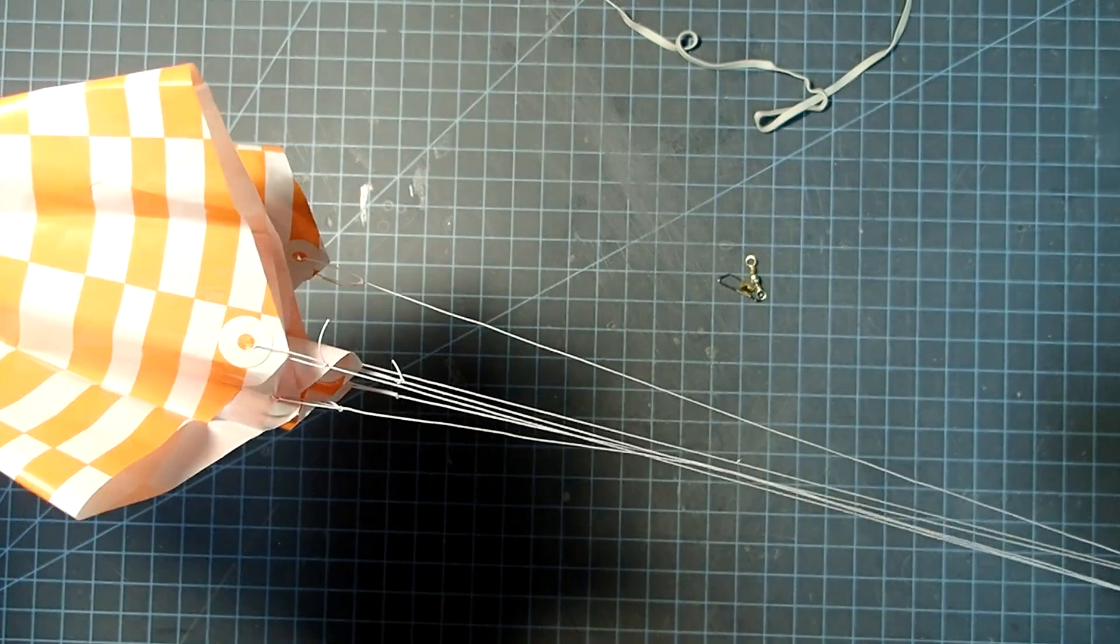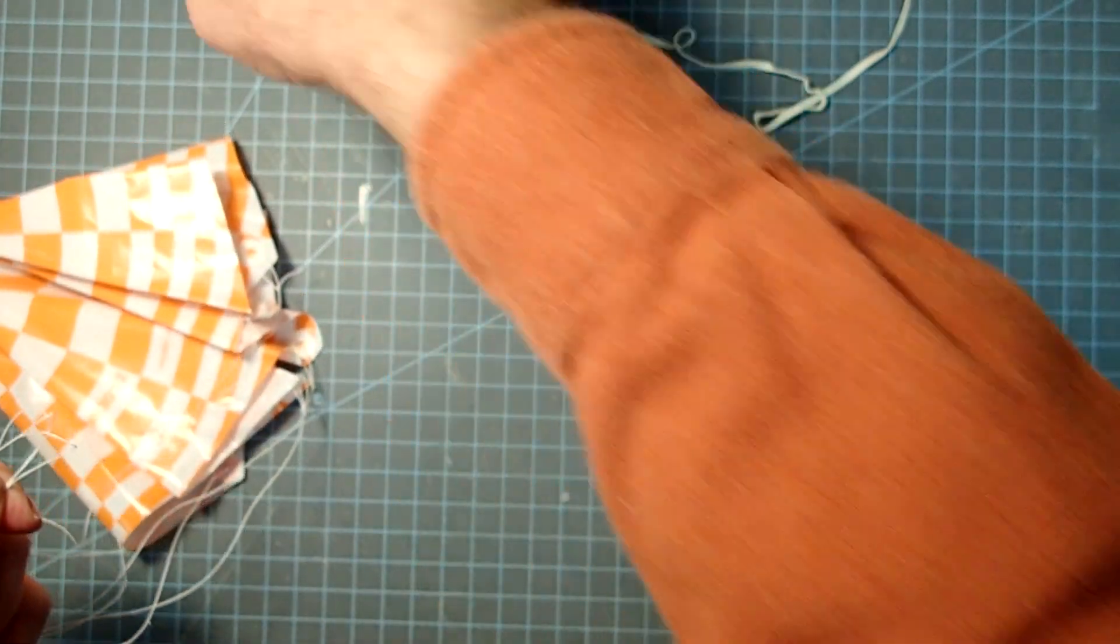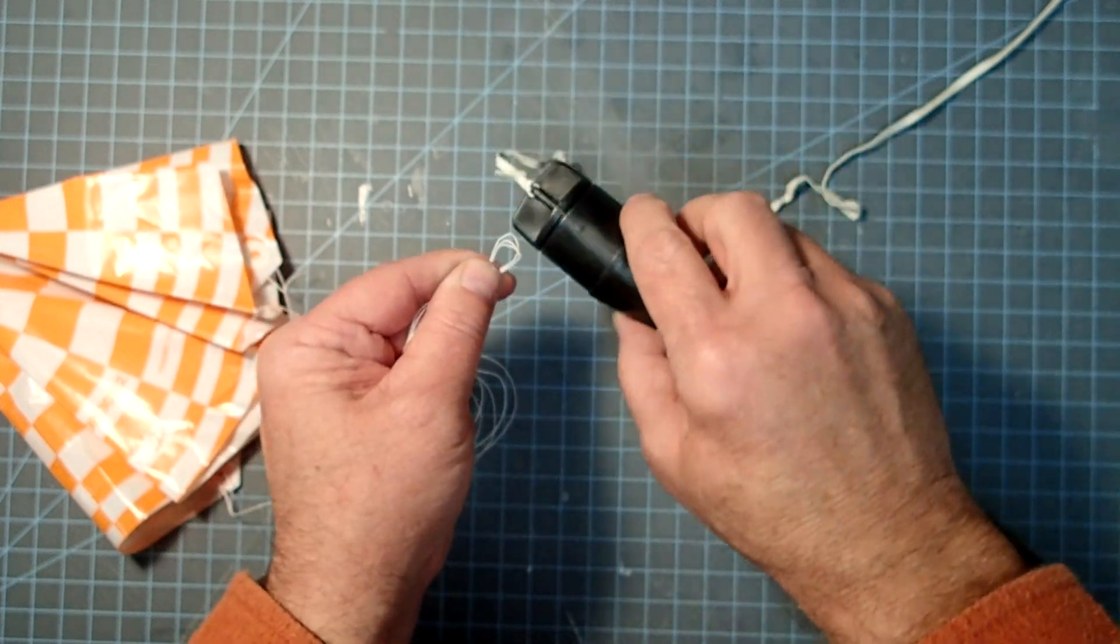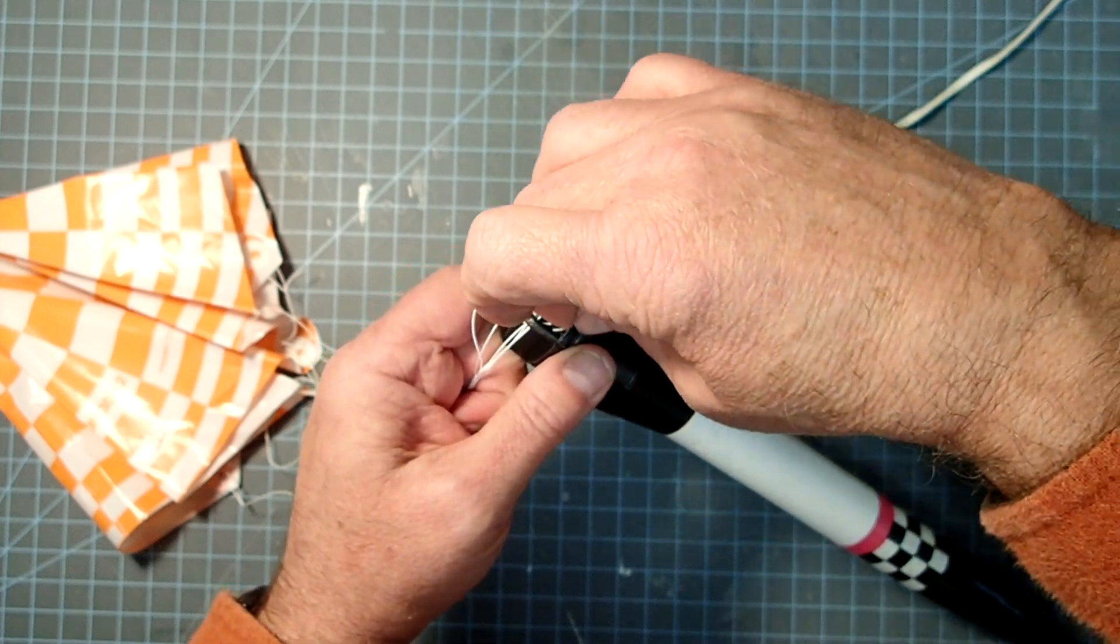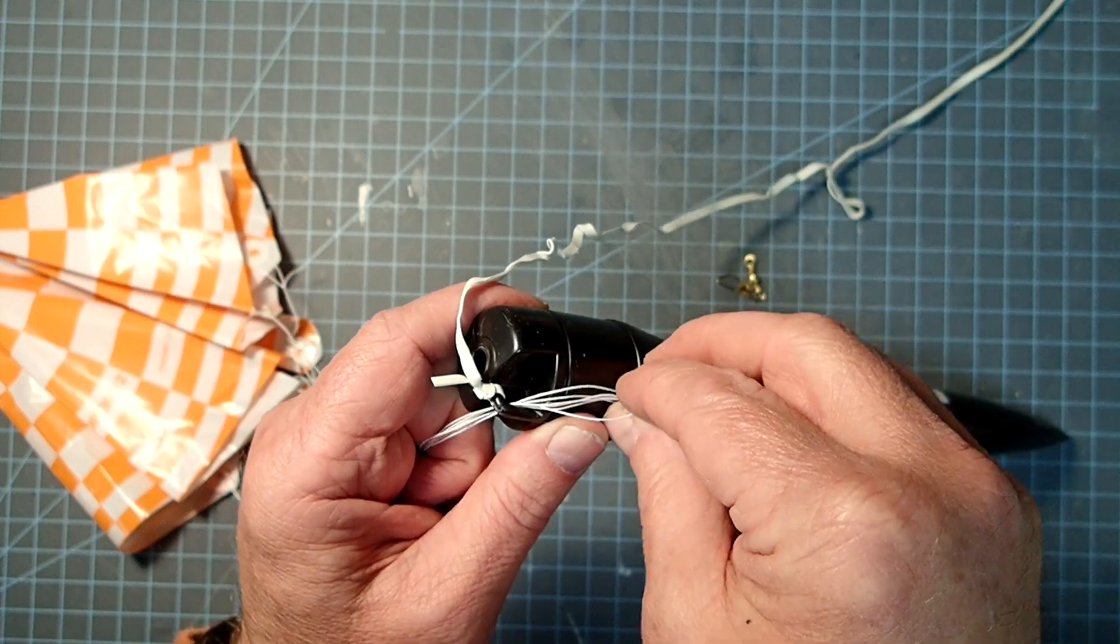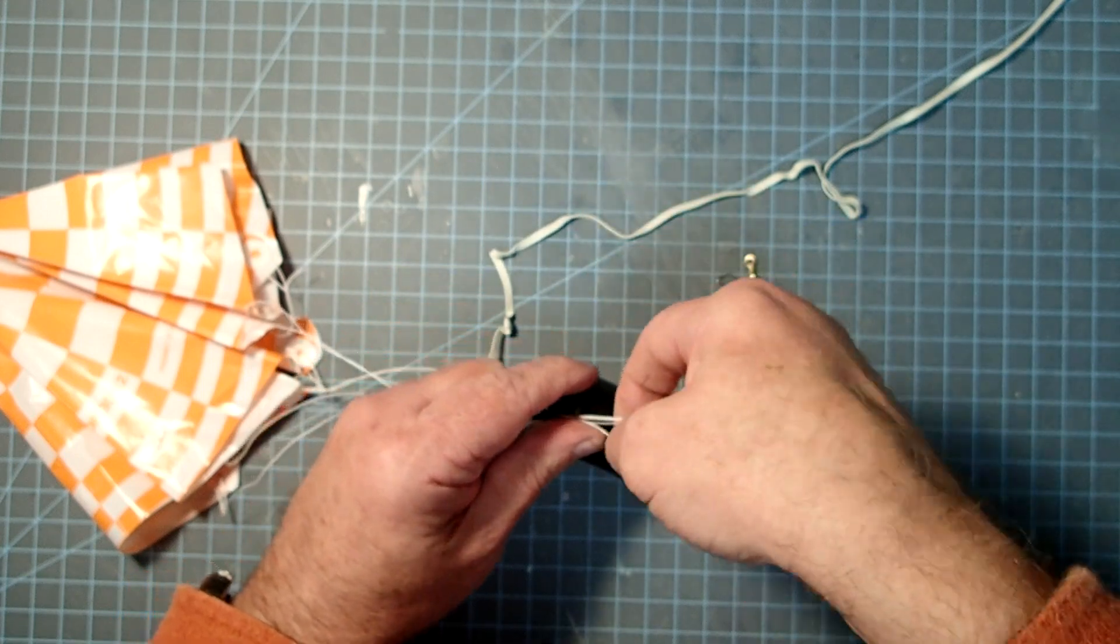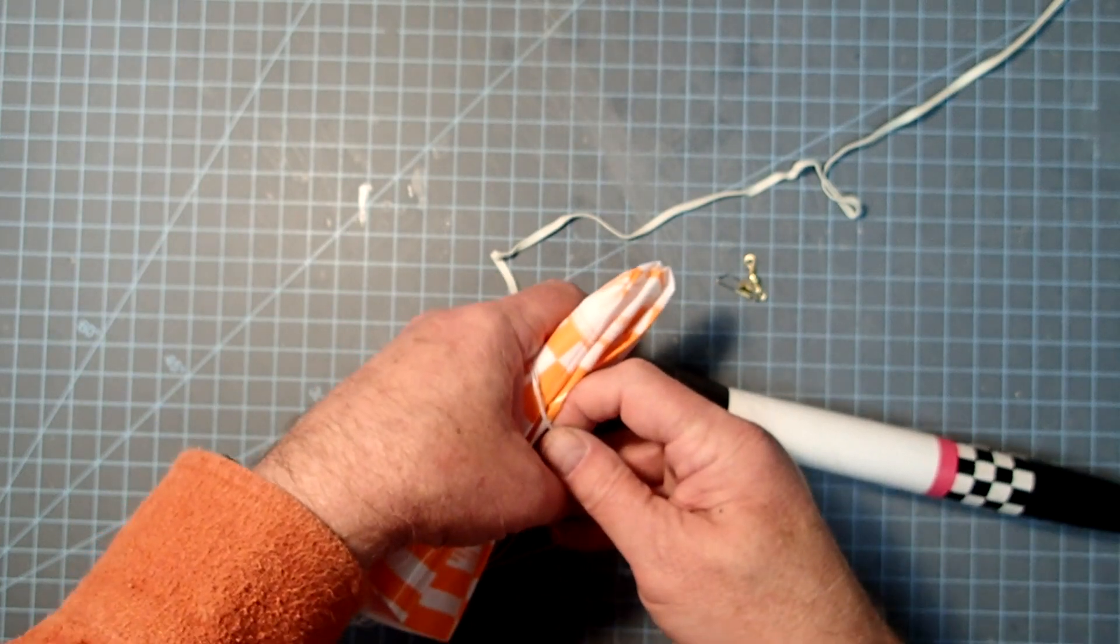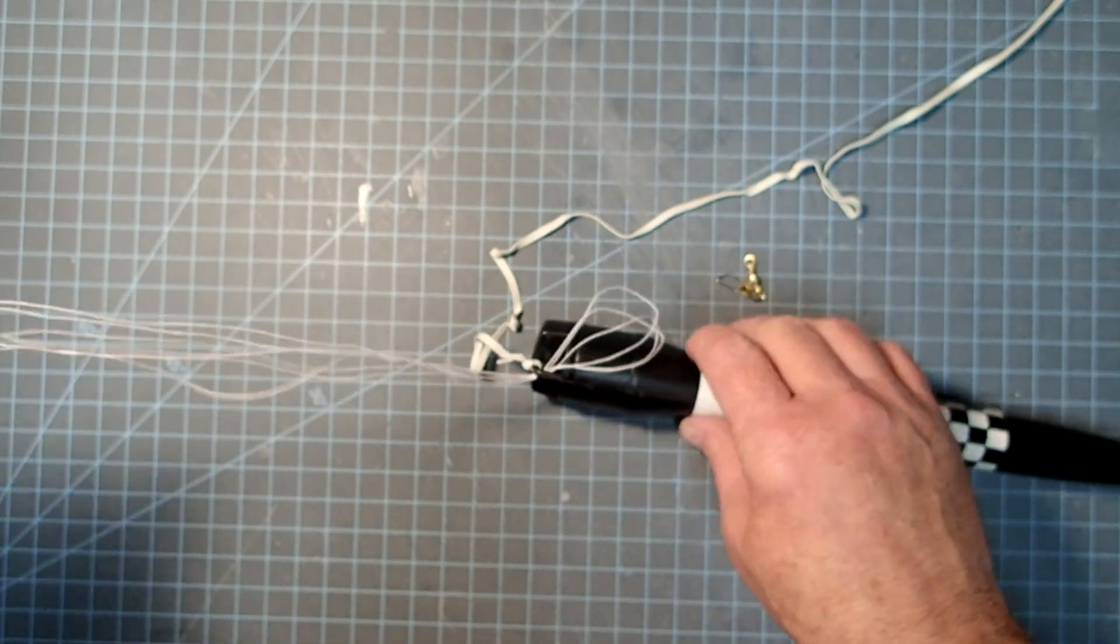Okay, so once more, holding all those shroud lines there. Now, if you just want to attach this to the eyelet here, what you'll need to do is pass those three loops through it. Okay, and then open them all up again like that. And then you're going to pass the entire parachute through these loops and then pull it tight. Now, I'm not going to do that because I want to use the snap swivel on mine.